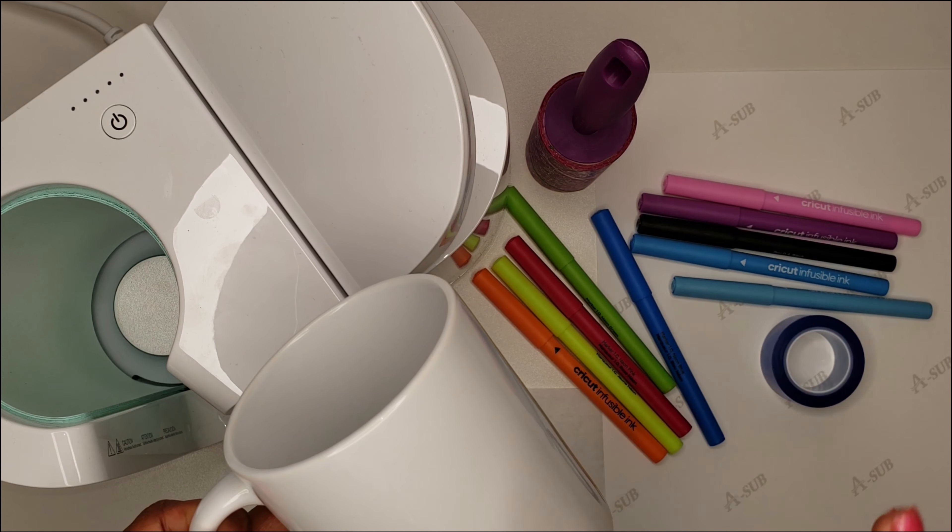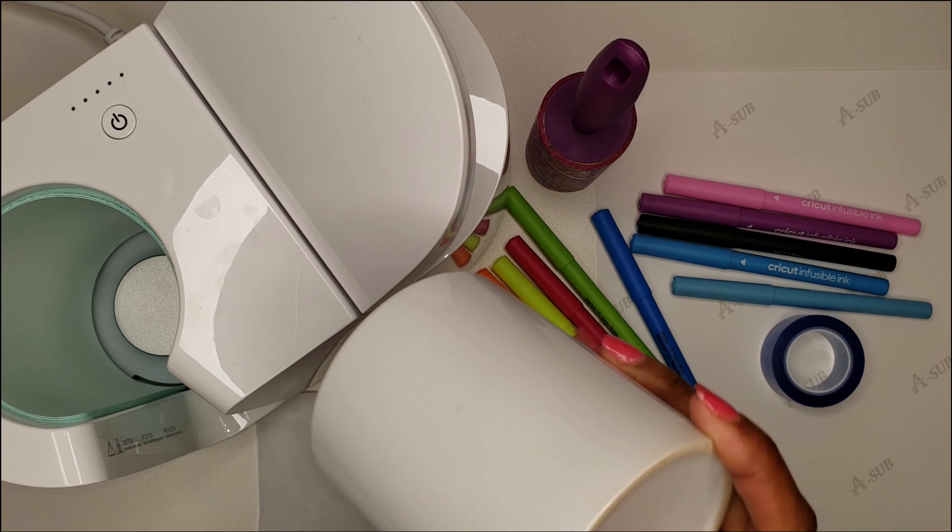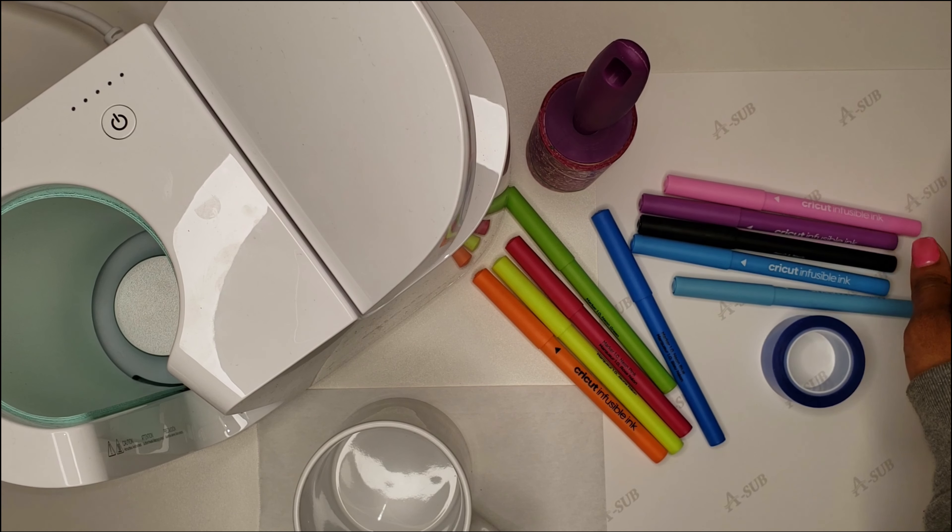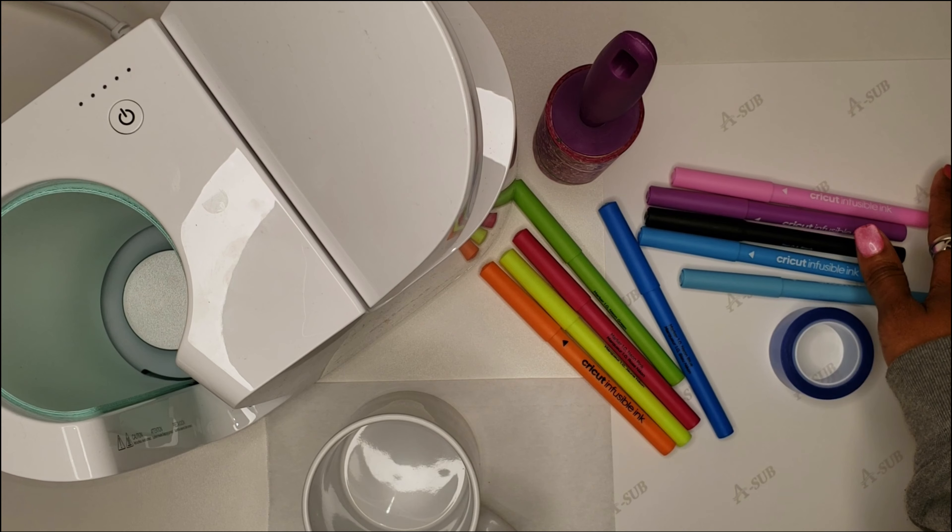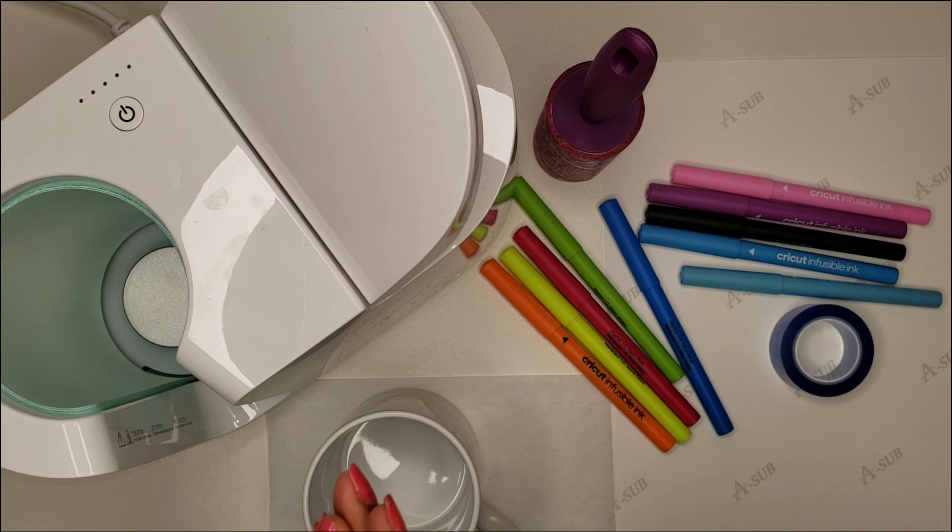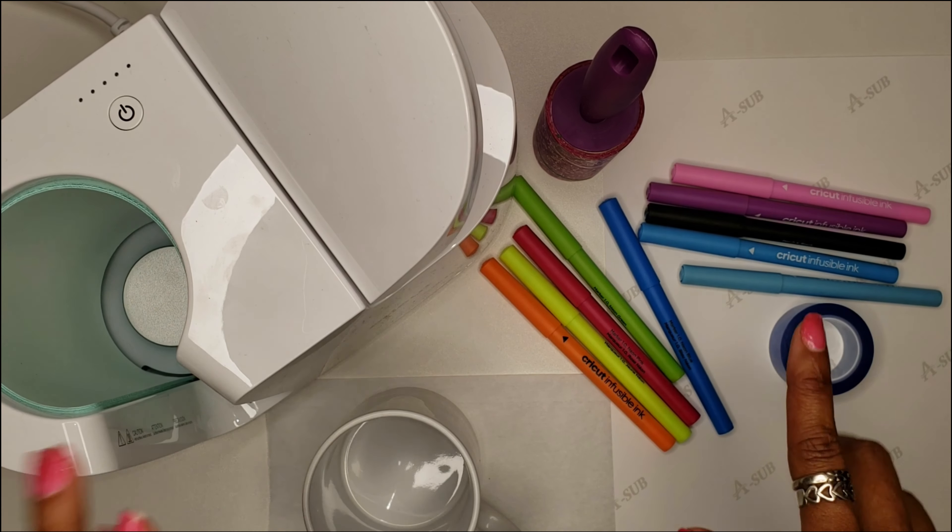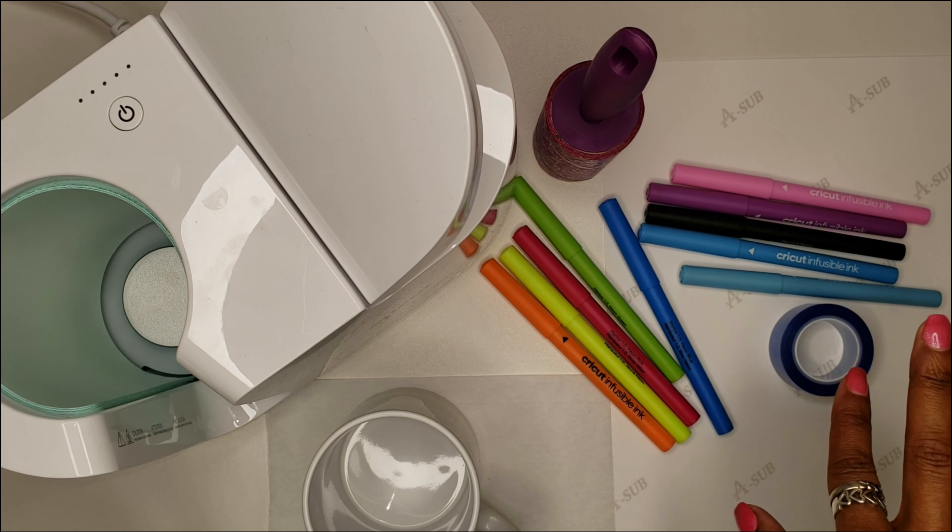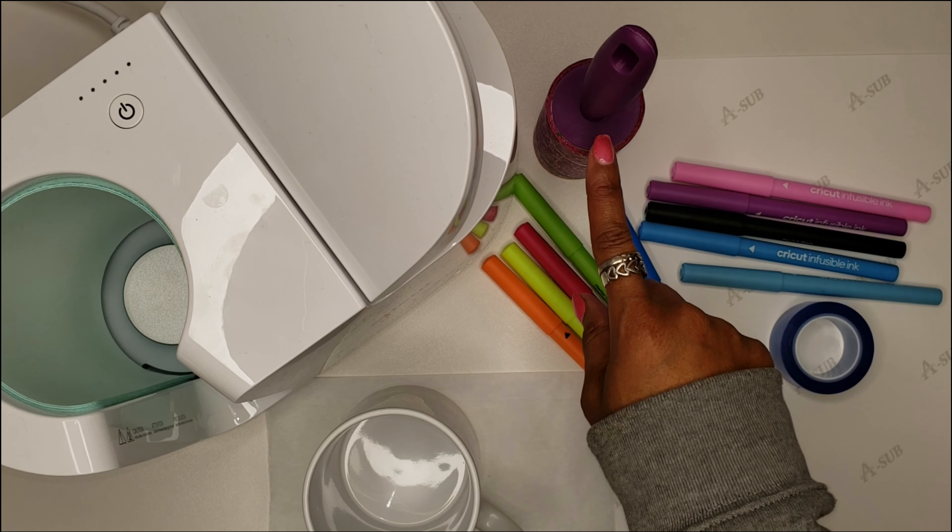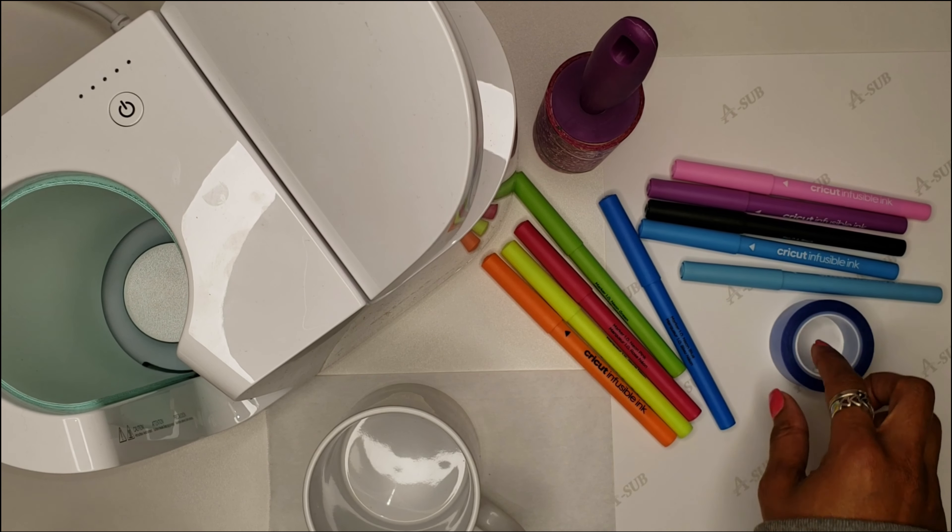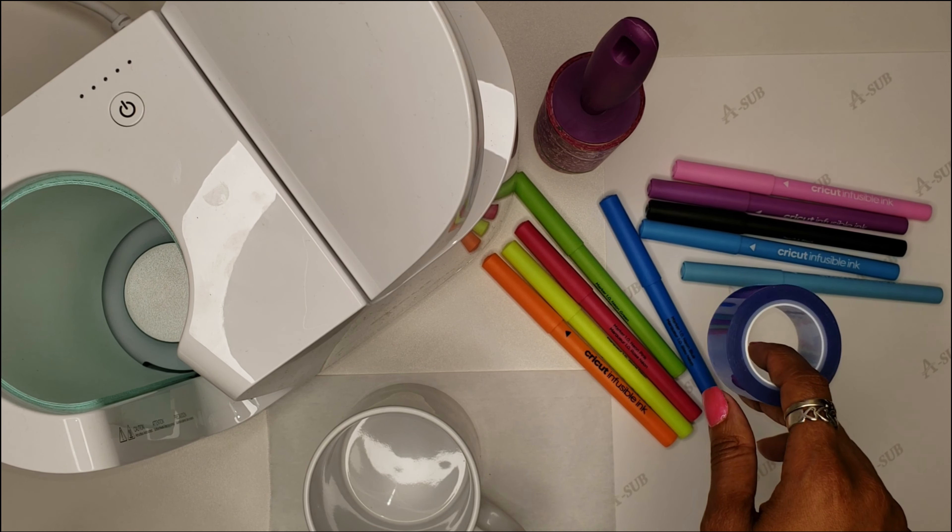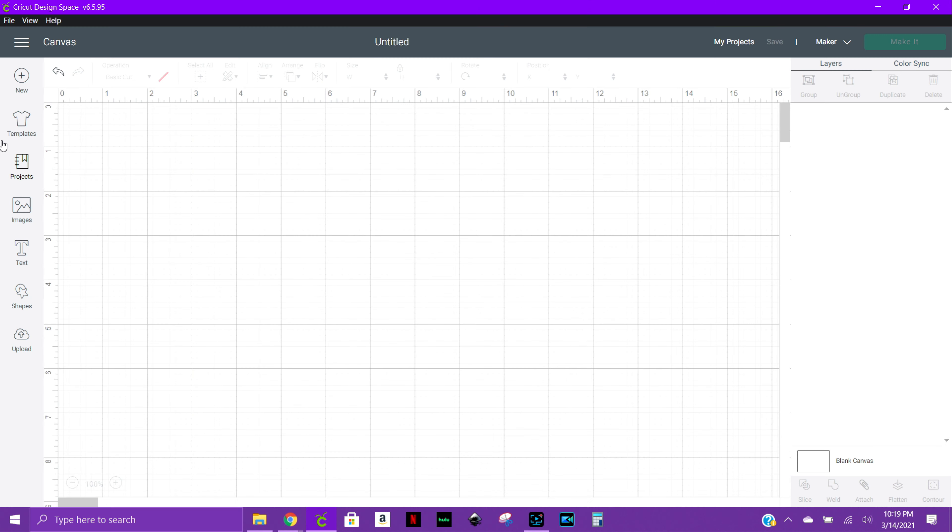This is a non-Cricut mug, so I also have some sublimation paper here. They say you're supposed to use laser paper, but I don't have any on hand, so I figured why not try the sublimation paper - we will find out together. Also have some paper here to protect the press and our lint roller to clean up our mug, as well as our heat resistant tape. So let's go ahead and jump right into Design Space.